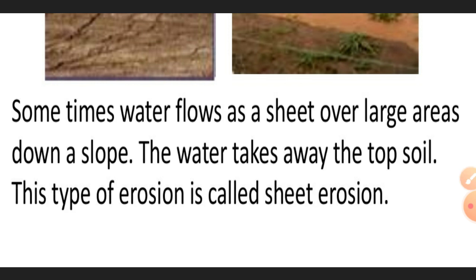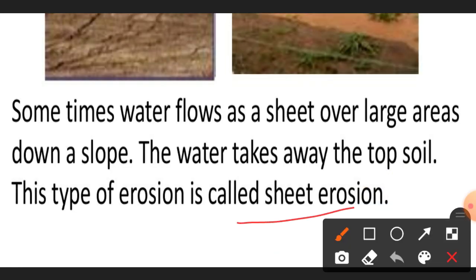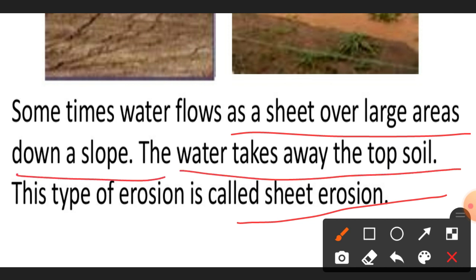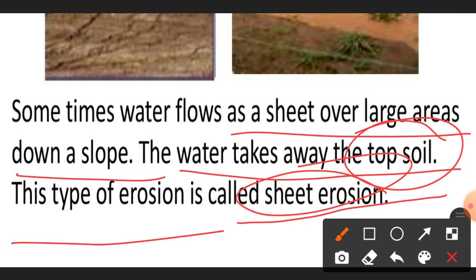Sometimes water flows as a sheet over a large area down a slope. Sheet erosion means the water flowing as a sheet takes away the topsoil — there is a removal of the entire surface layer. This kind of layer removal is called sheet erosion. Water is the dominant cause of sheet erosion.